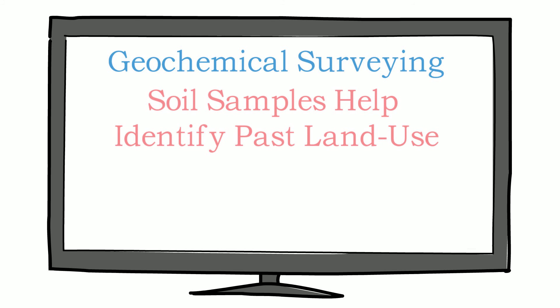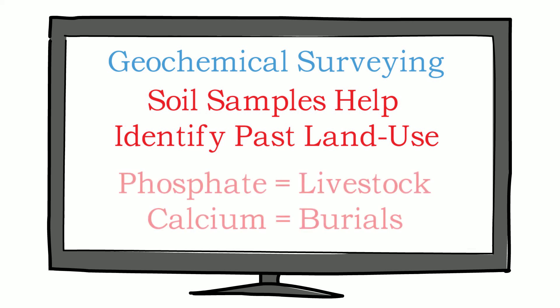Soil samples from the surface level may also be analyzed for their element composition. This is a method known as Geochemical Surveying which can be used to identify specific past land use. For example, a soil area high in phosphate levels indicates livestock had been present or an area high in calcium content suggests human burials exist on site.